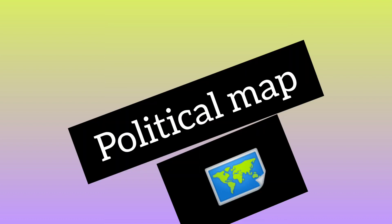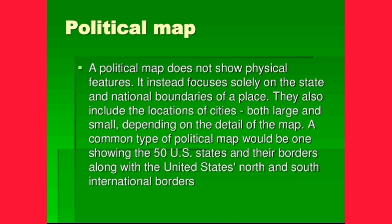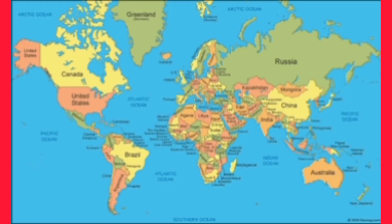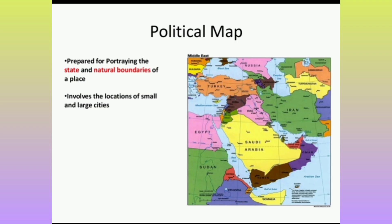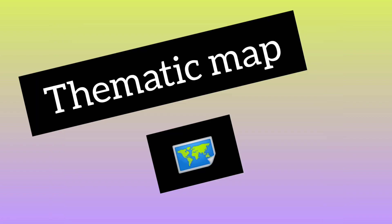Next we are going to discuss about the political map. A political map gives information about boundaries — boundaries in the sense of place boundaries, including straits, capitals, and union territories. So a political map gives information related to places such as straits, capitals, and boundaries.